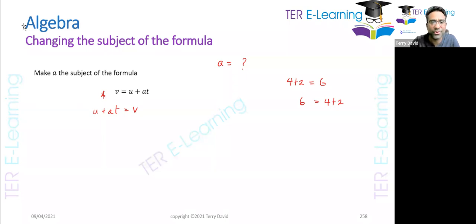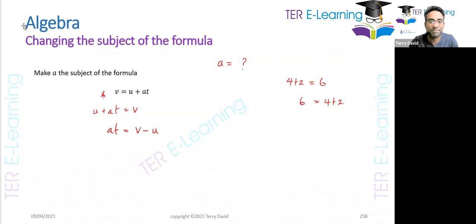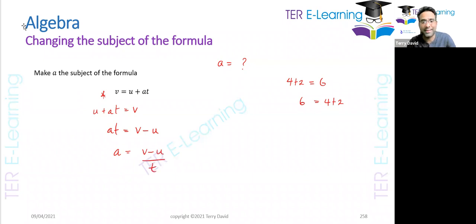We're trying to make a the subject of the formula, so we need to get rid of the u on the left hand side. So at is equal to v minus u — essentially I'm subtracting u from both sides. Next, to find a we need to get rid of the t by dividing both sides by t. So a is equal to v minus u all over t. That's the answer: a equals (v minus u) divided by t.